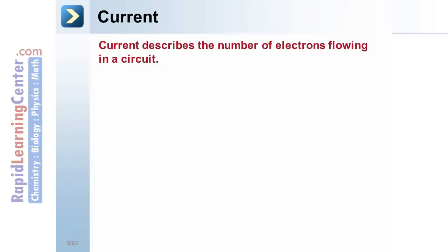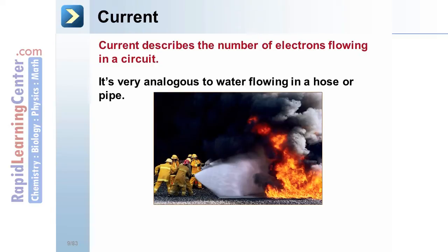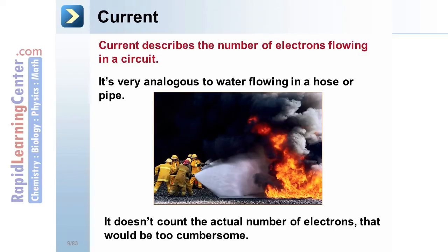Current. Current describes the number of electrons flowing in a circuit. It's very analogous to water flowing through a hose or a pipe. However, it doesn't count the actual number of electrons that would be far too difficult and cumbersome because, in general, many millions and millions of electrons flow through most circuits.